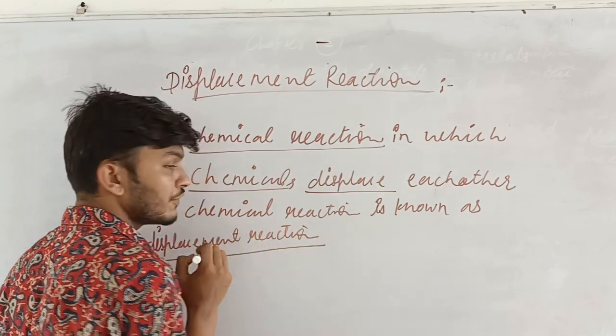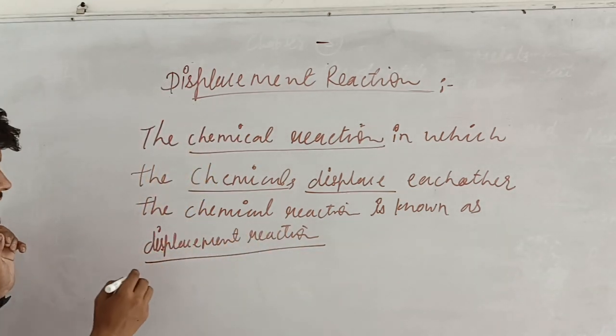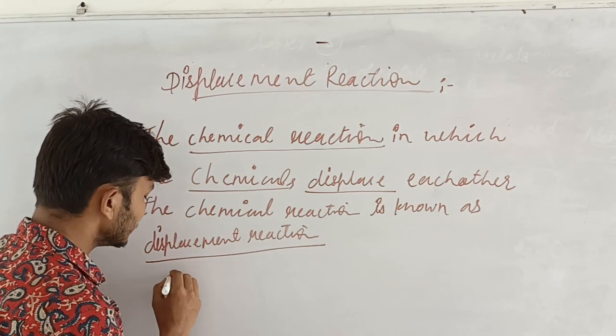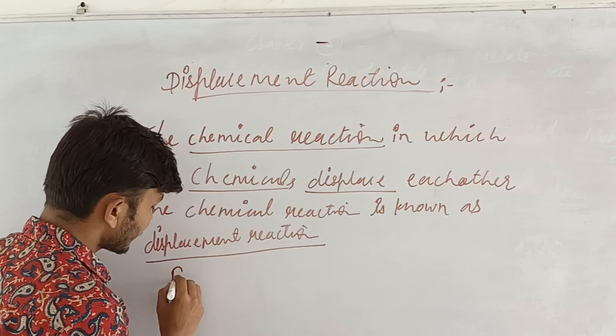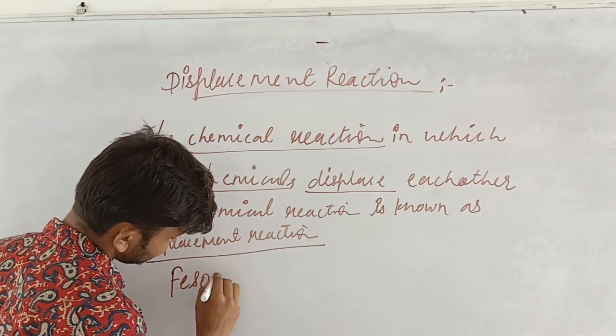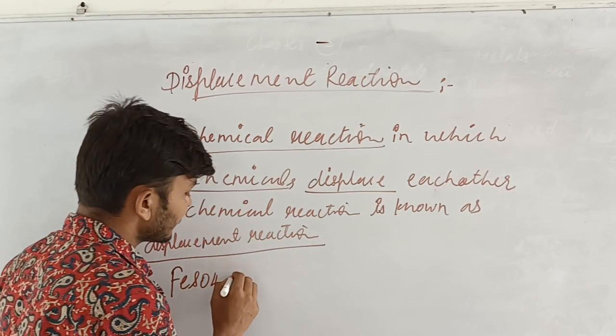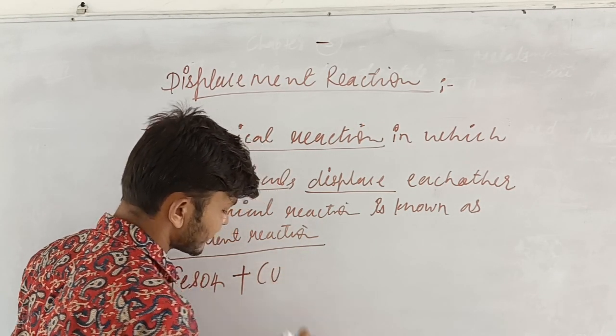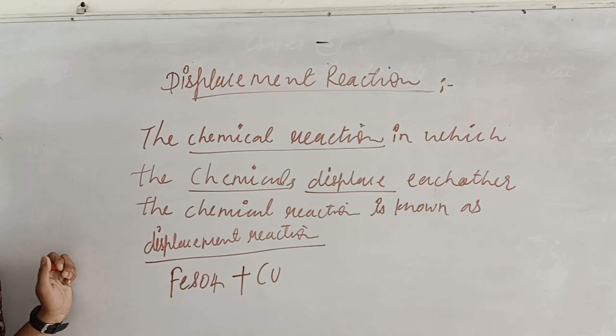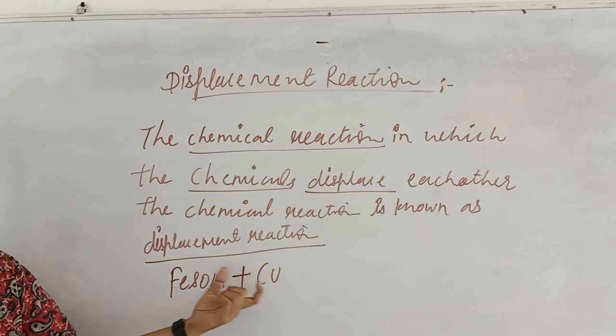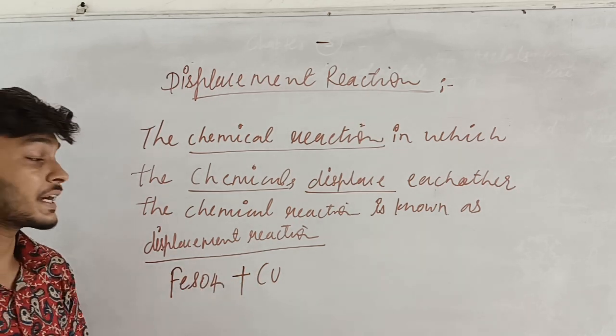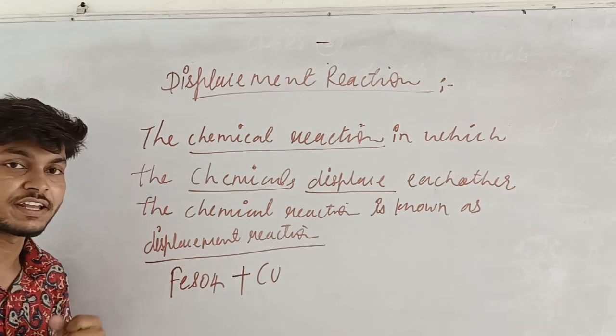If you talk about an example, we will discuss the chemical reaction. Just like we have taken ferrous sulfate. Ferrous sulfate reacts with copper. Copper is a different element and this is more reactive as comparable to iron and ferrous.